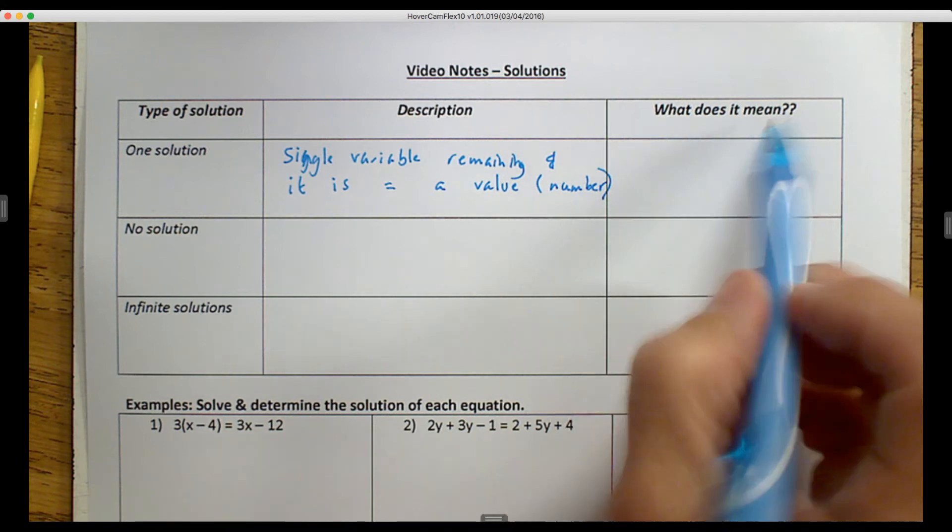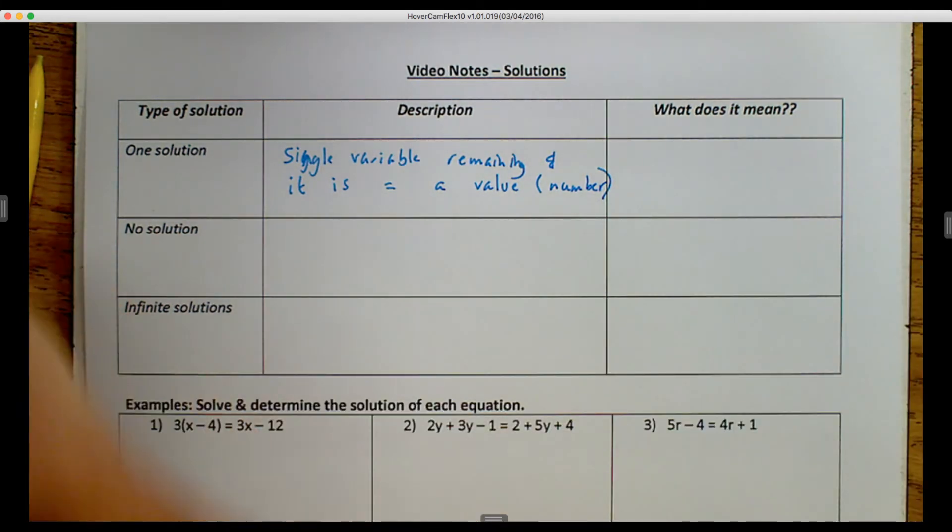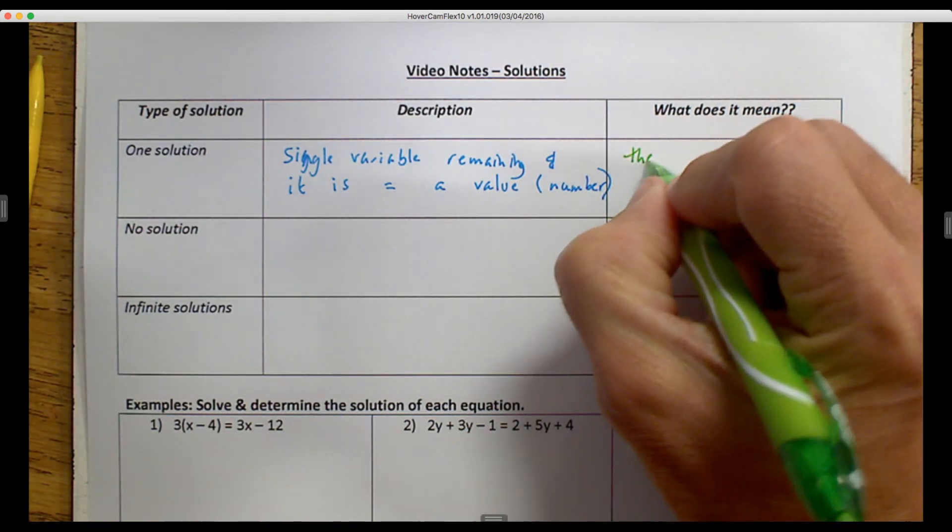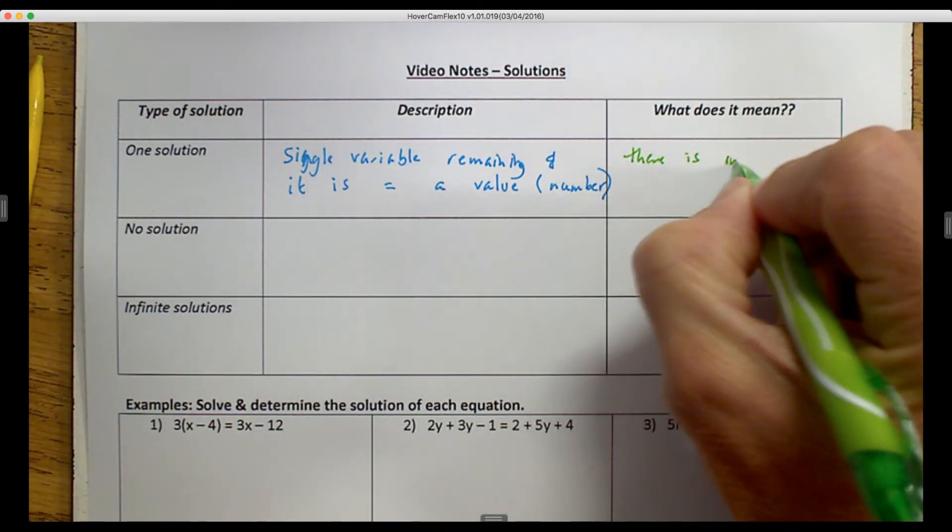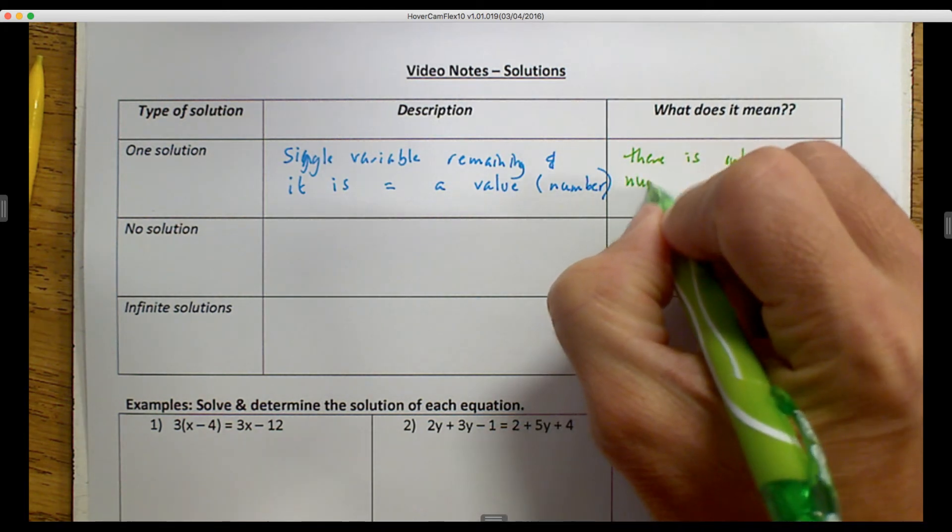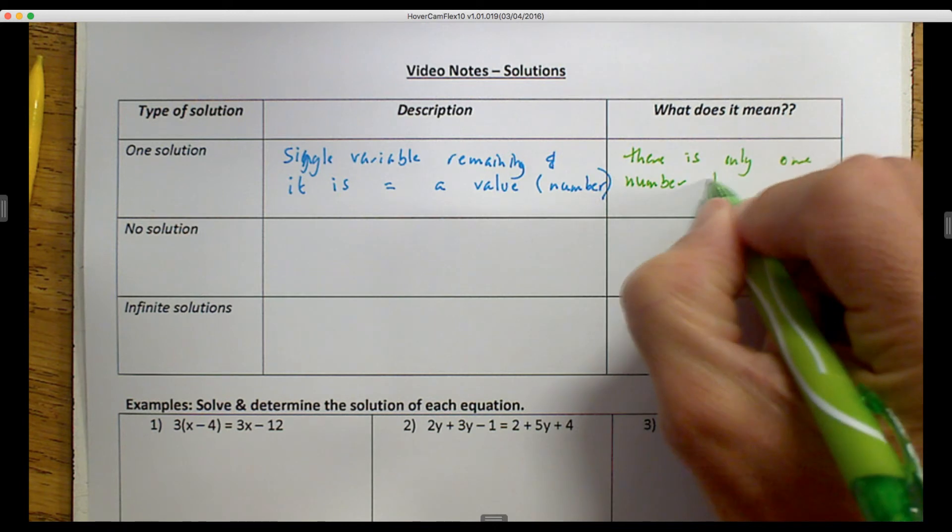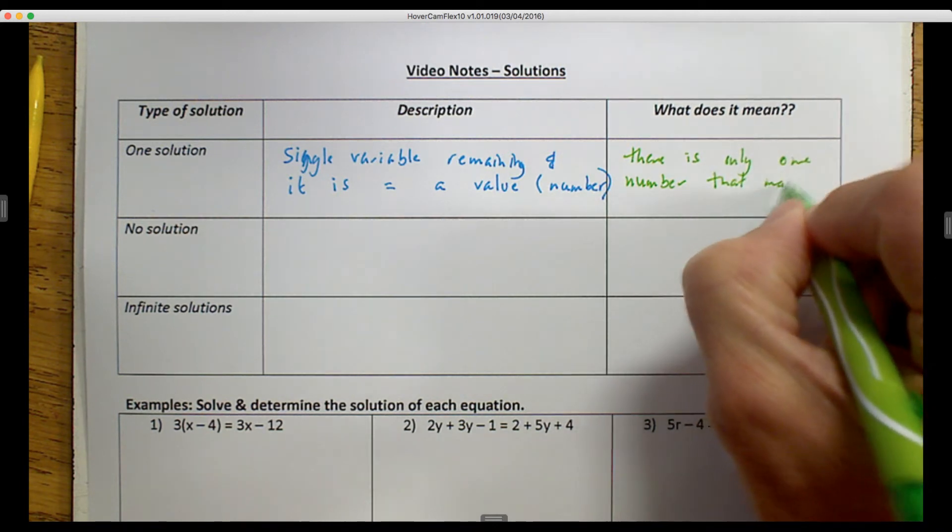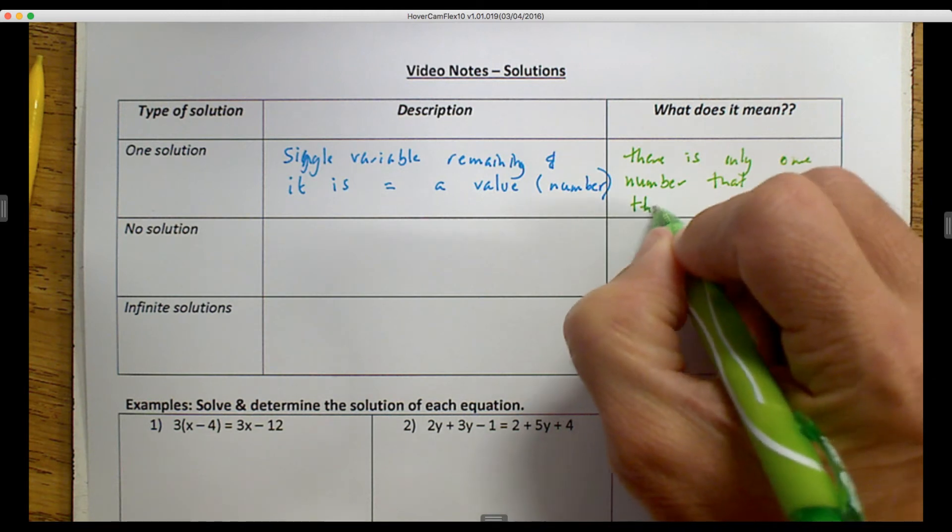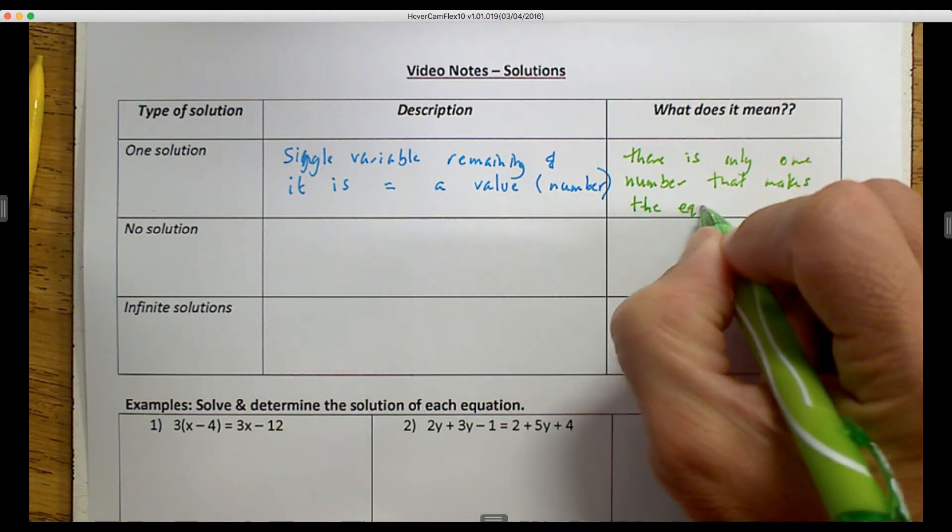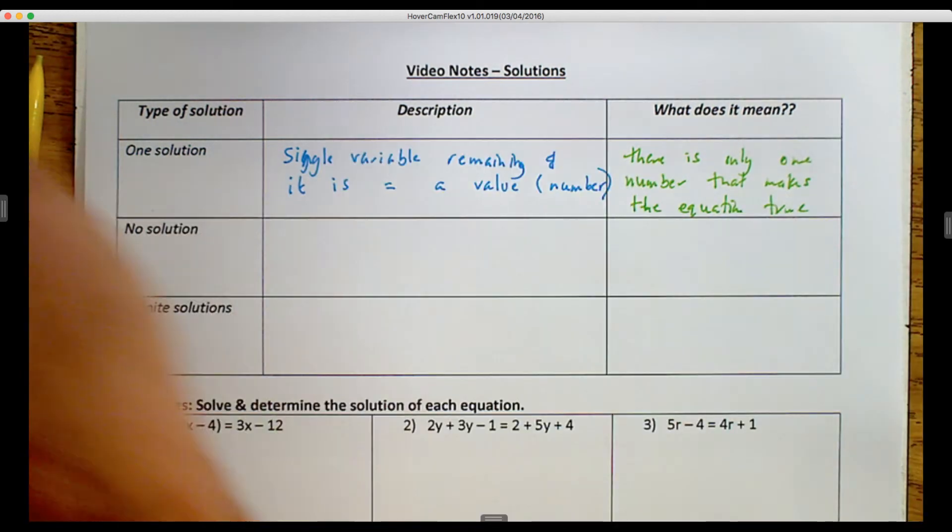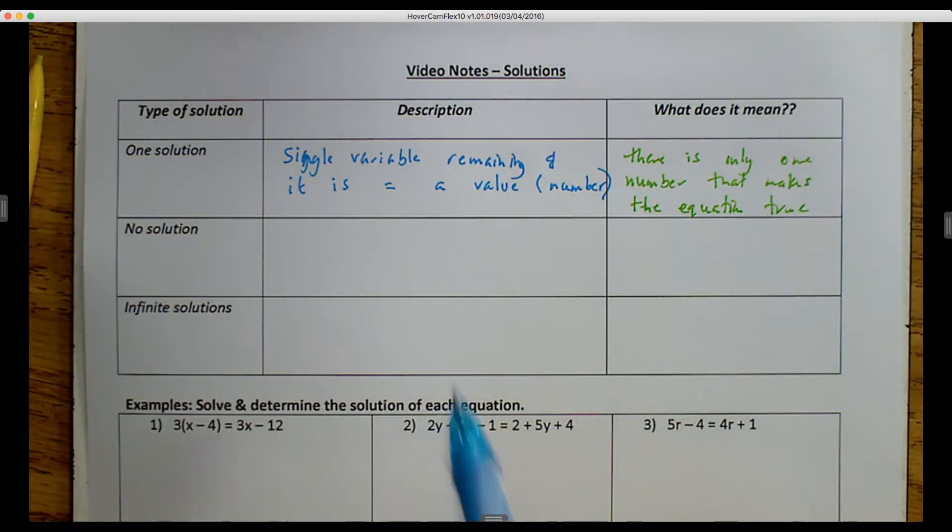Now, what does that mean? It means that there is only one number that makes the equation true. So that's for one solution.